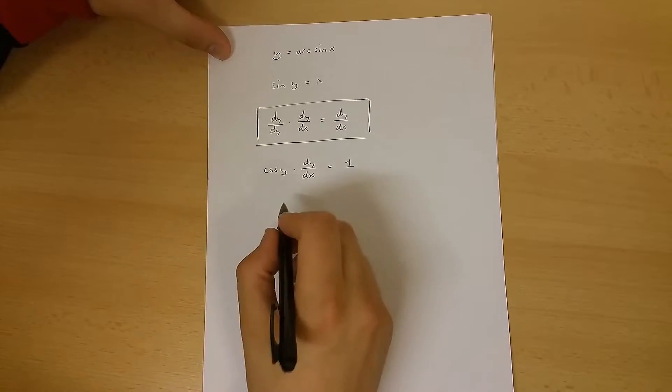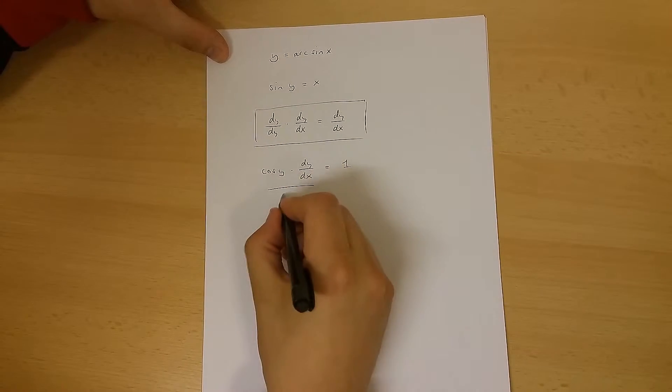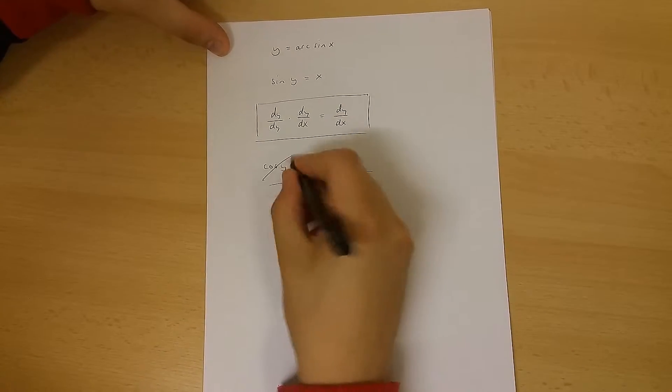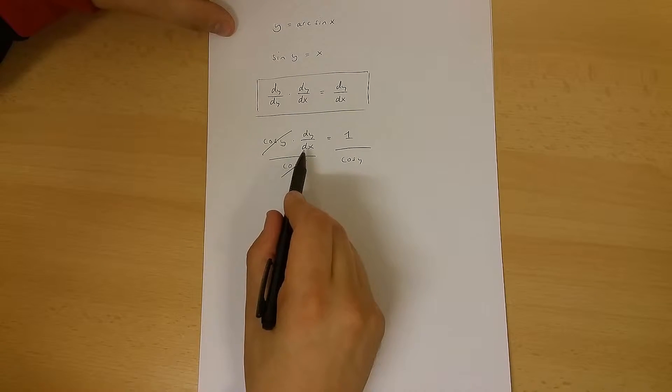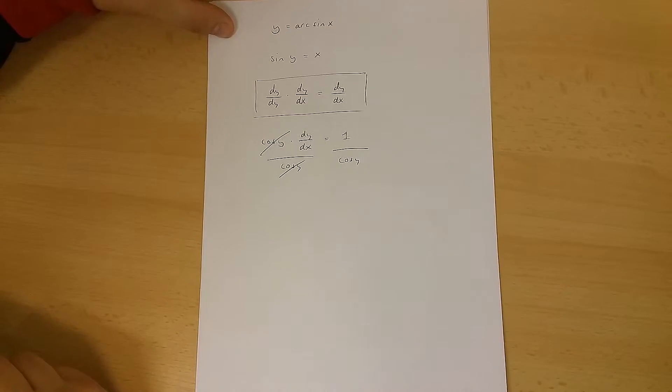Now let's divide both sides of this equation by cos(y). If we do this, we get dy/dx equals 1 over cos(y).